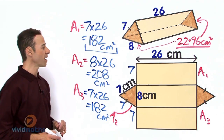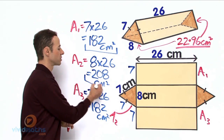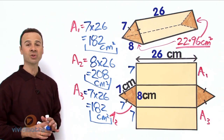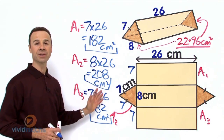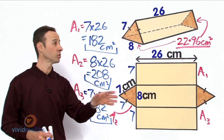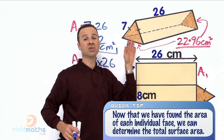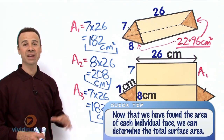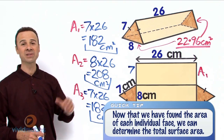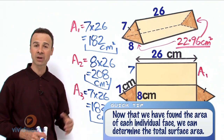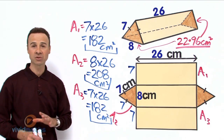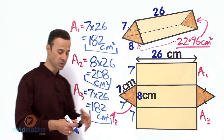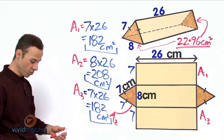We now have all 3 rectangular panels calculated. All we need to do is add those 3 rectangles to the first 2 triangular faces — the front face and the back face. Together we have 5 faces. Let us add all of them up for the complete entire total surface area of this triangular prism.